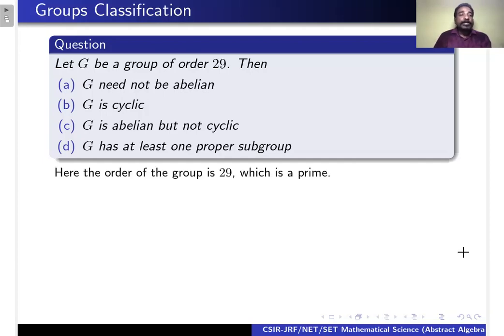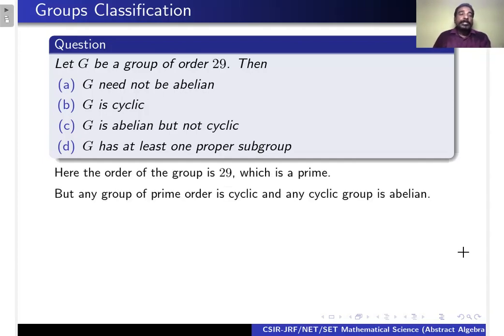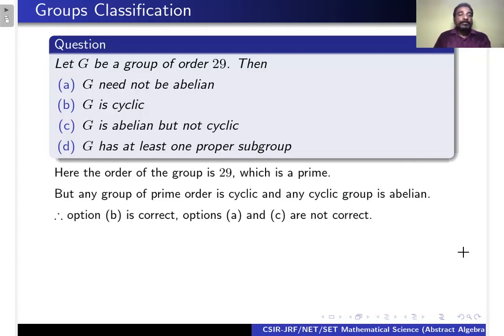The group has order 29, which is a prime number. Any group of prime order is cyclic, and any cyclic group is abelian. Therefore, option A and C are not correct, but option B is correct.